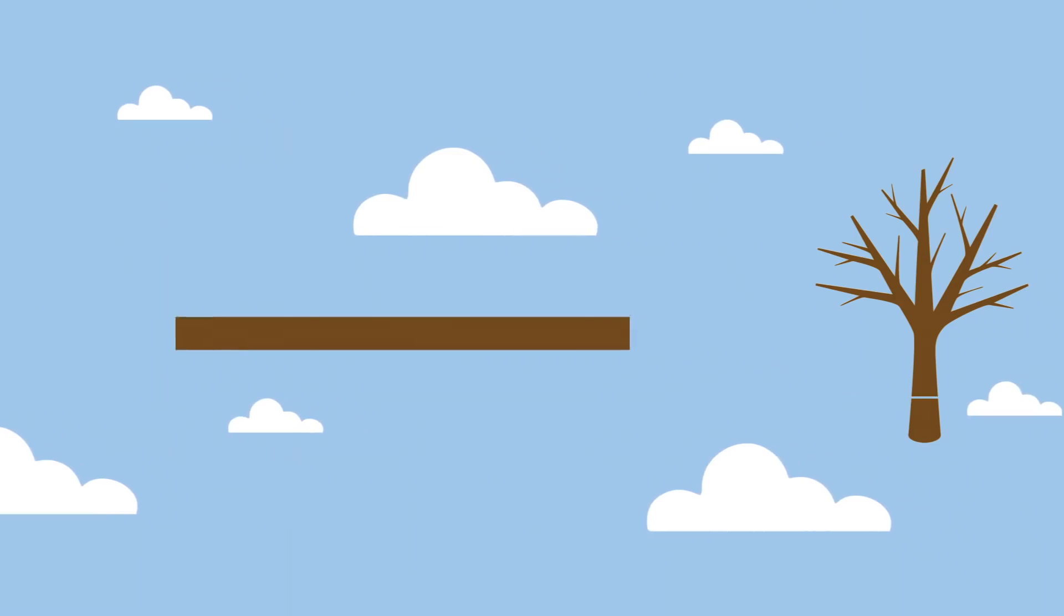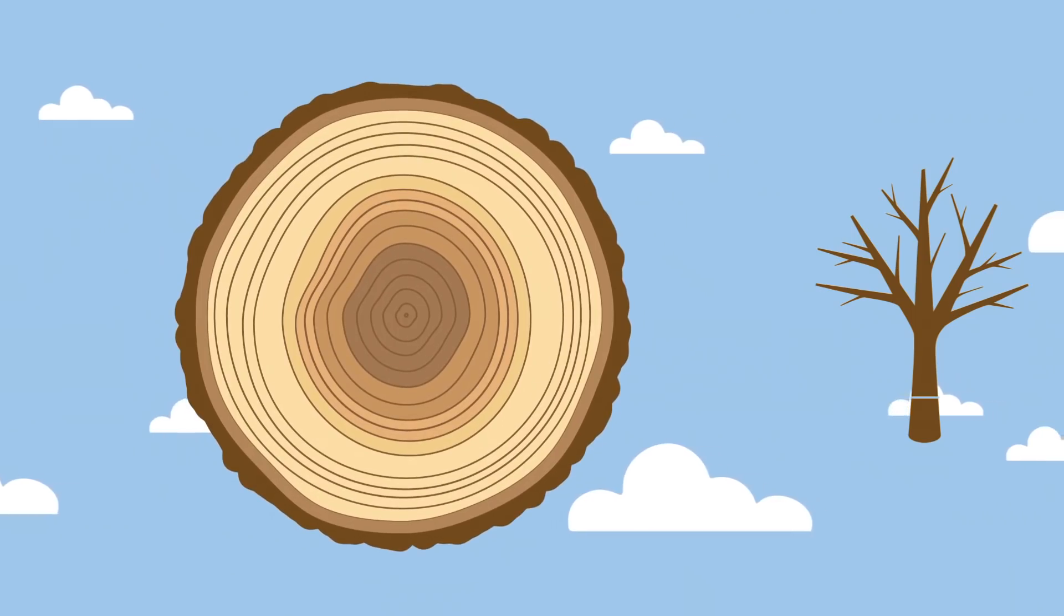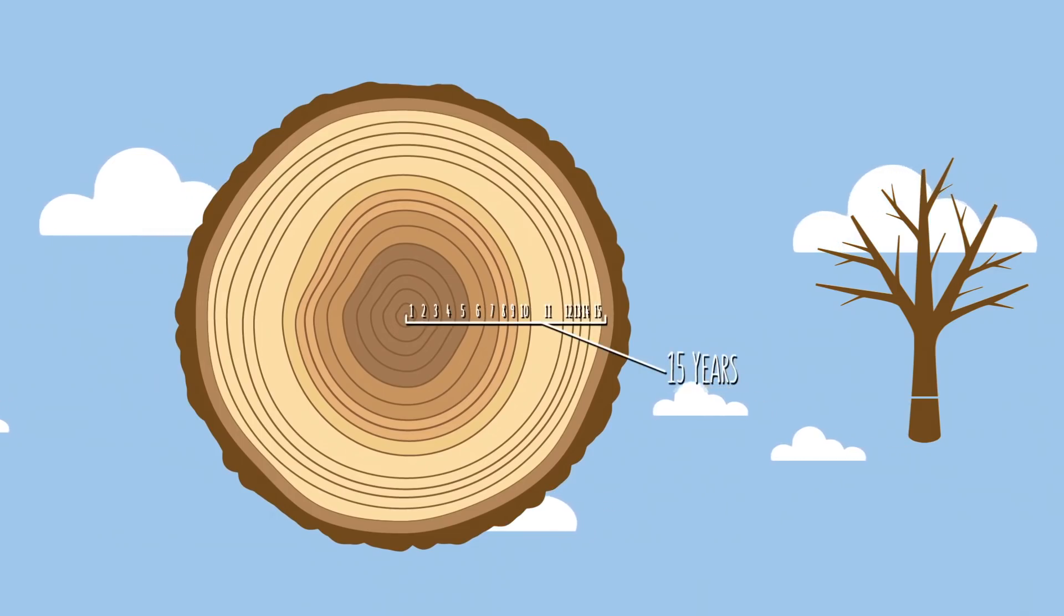So first of all, we're all familiar with the growth rings that can be seen on a freshly cut log, branch, or stump. Each of these represent a year of the tree's life. So by counting them, we can accurately determine the tree's age. And by examining their appearance, we can even deduce the kind of weather conditions it experienced throughout the seasons. For example, wider rings typically indicate warm years with above average rainfall, because the extra water and sunshine allowed the tree to put on extra growth.